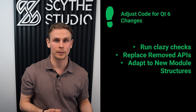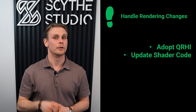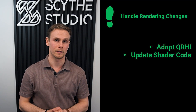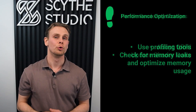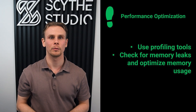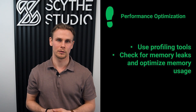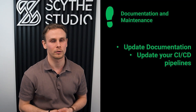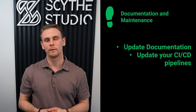Some modules have been restructured or renamed in Qt 6 — update your code to use the new module structures. You can also use the Qt 5 Compat library, which is a module that contains Qt 5 core APIs that were removed in Qt 6. If your application relies on OpenGL, you may need to adapt it to use QRHI, which supports multiple graphics APIs. If your application uses custom shaders, update them to be compatible with the new unified shaders pipeline in Qt 6. Use profiling tools in Qt Creator to identify and optimize performance bottlenecks. Check for memory leaks and optimize memory usage with the improved memory management features in Qt 6. Finally, update your CI/CD pipelines to use Qt 6, ensuring builds and tests are performed in the new environment.